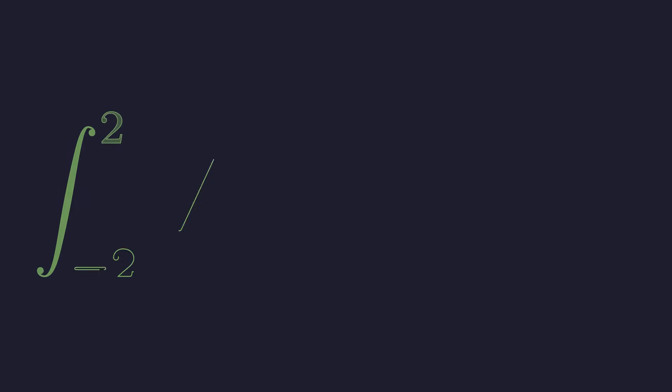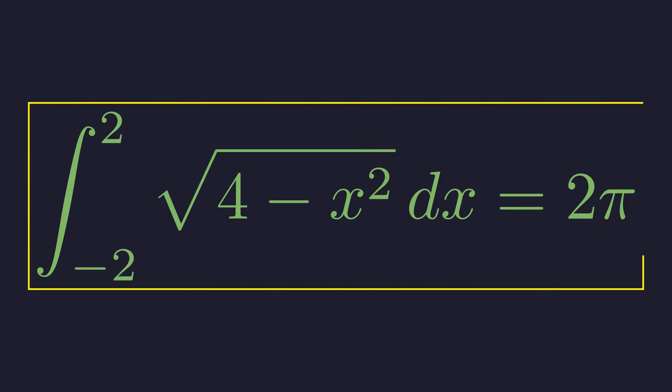So there's our answer. The integral from negative 2 to 2 of the square root of 4 minus x squared equals 2 pi. Not through messy algebra, but through seeing what the function really represents.